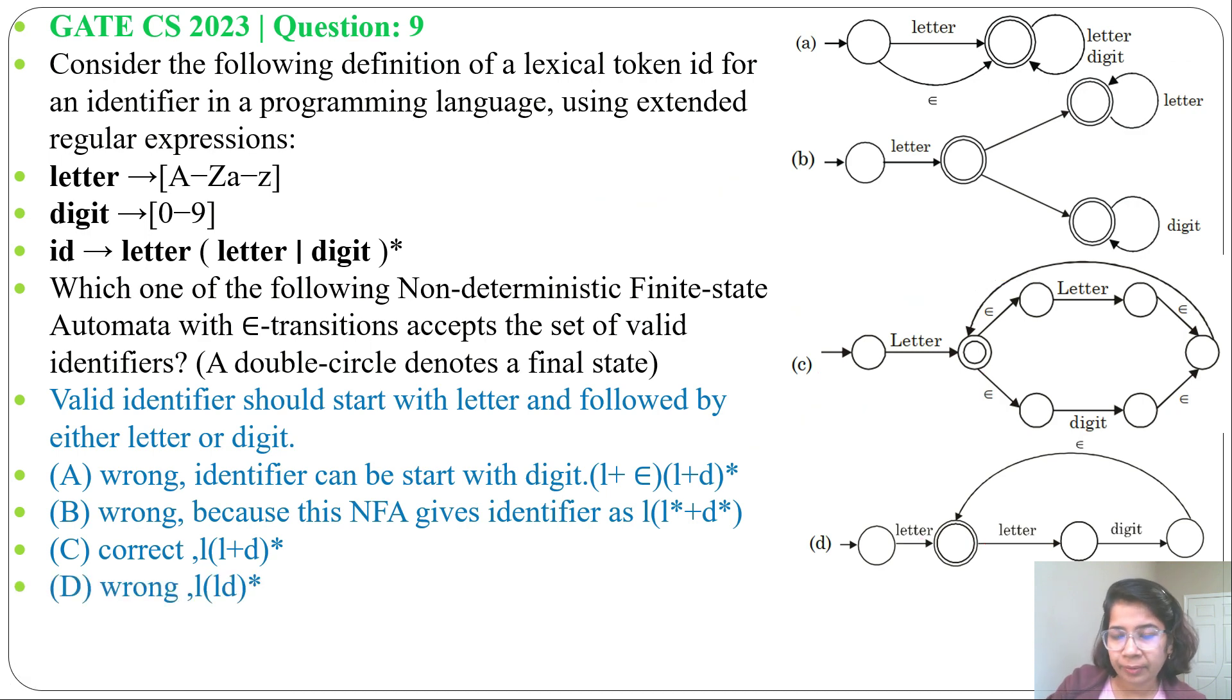So from these four NFAs, option C can generate the identifier. So answer is option C.